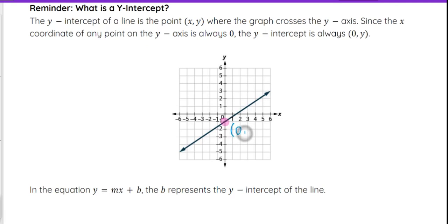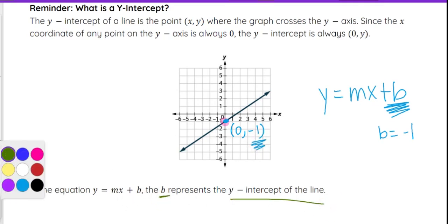In this case, that would be the ordered pair 0, negative 1. If I were to write the equation of this line, which we'll talk about in the future, the b value comes from the number that the line crosses on the y-axis. So the b value here would be that negative 1 from that y-intercept. In that equation, the b represents the y-intercept of the line.